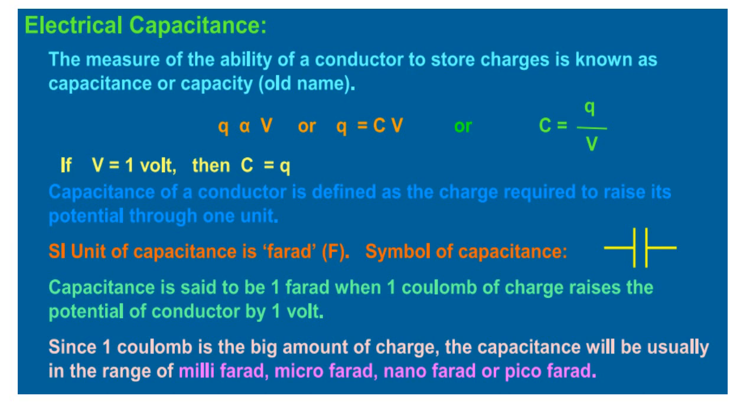The capacitance of the conductor is 1 Farad if the addition of a charge of 1 coulomb to it increases its potential by 1 volt. You can write 1 Farad is equal to 1 coulomb by 1 volt.